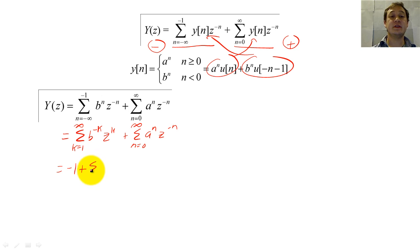Now we need to change the limits of the sum so that it goes from zero to infinity. Since B to the zero times Z to the zero equals one, we can add negative one outside the sum to change the limits of the Z-transform.